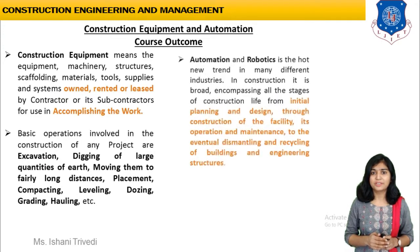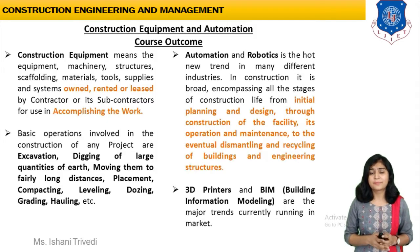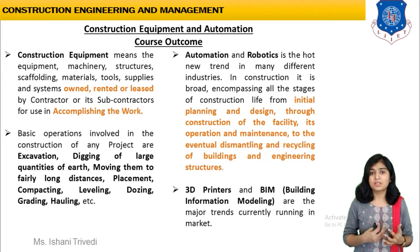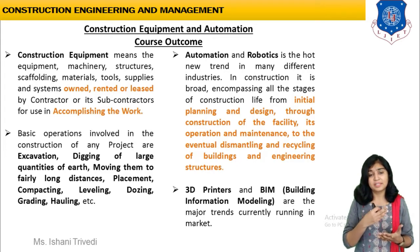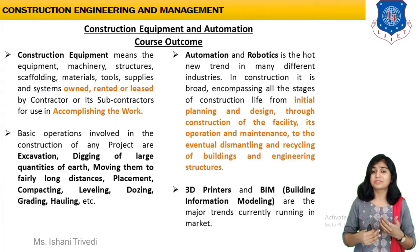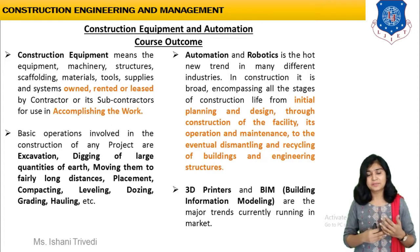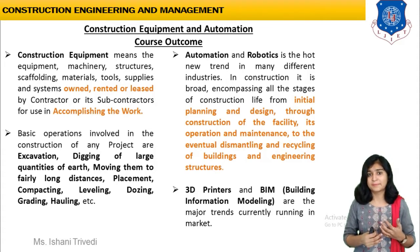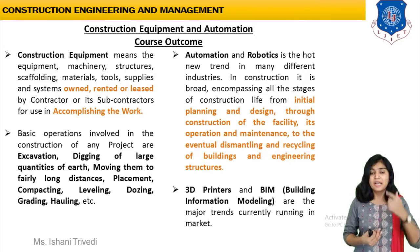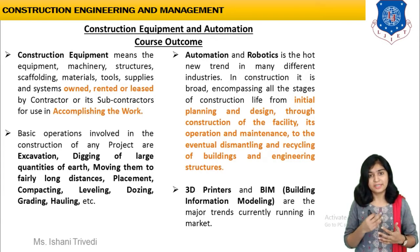Now let us look at the course outcome — what we are going to exactly derive and extract from this subject. We are going to talk about different construction equipment divided into different categories: special equipment or standard equipment, and based on its construction procedure — continuous or intermittent. Along with that, we will talk about the cost of purchasing, hiring, leasing, renting the equipment, and how to calculate using various formulas.